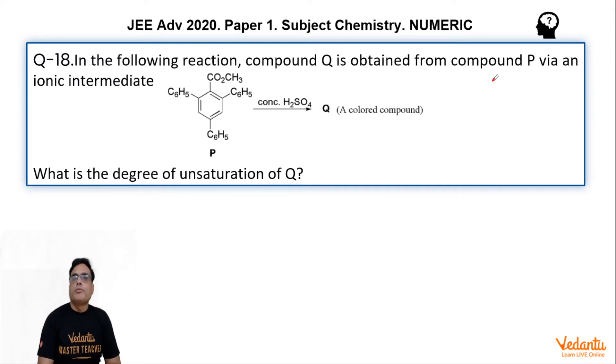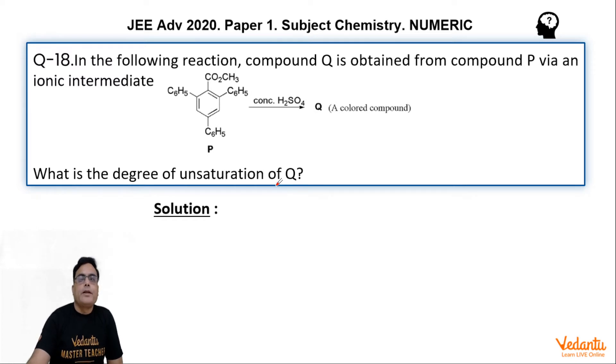Question says: in the following reaction, compound Q is obtained from compound P via an ionic intermediate. It is treated with concentrated H2SO4 and then you get Q which is a colored compound. What is the degree of unsaturation of Q? Very classic question, very good question. Let us solve this question.